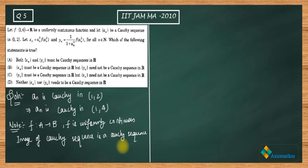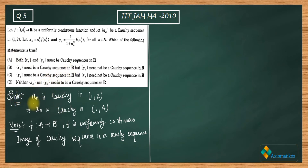Since we are working inside ℝ, we know that in ℝ a sequence is Cauchy if and only if it is convergent. Every Cauchy sequence is convergent and every convergent sequence is Cauchy. This is the fundamental property inside ℝ. Now, {an} is given to be Cauchy.